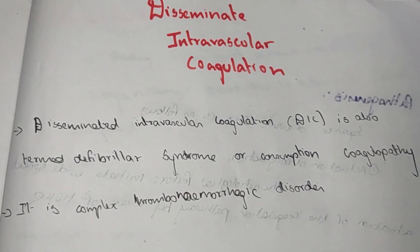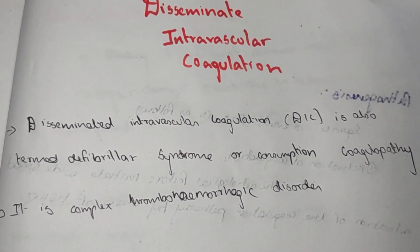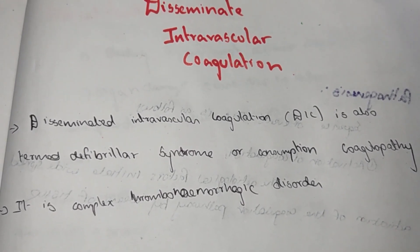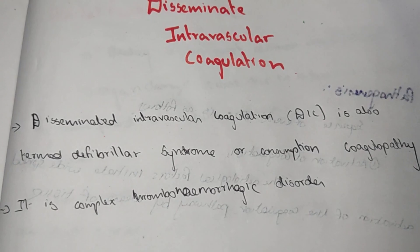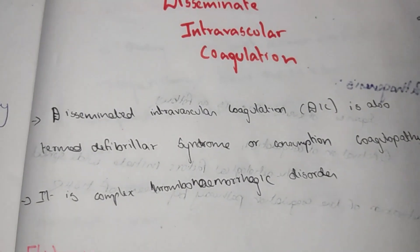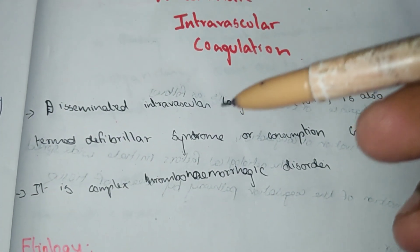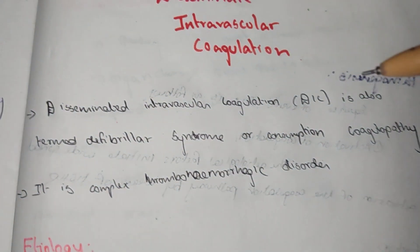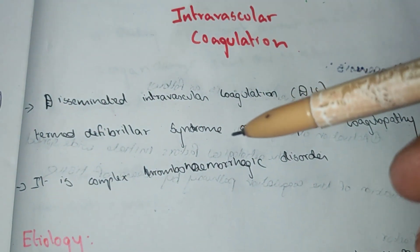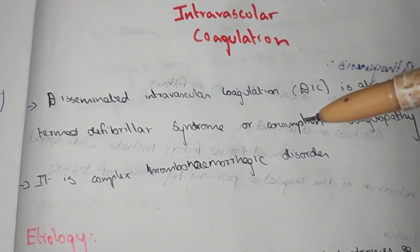Hi everyone, welcome to Medicine Not YouTube channel. In this video I want to cover disseminated intravascular coagulation. Disseminated intravascular coagulation is also known as defibrination syndrome or consumption coagulopathy. It is a complex thrombo-hemorrhagic disorder.